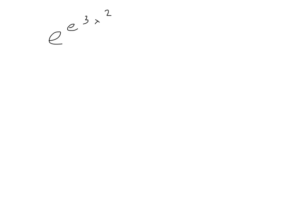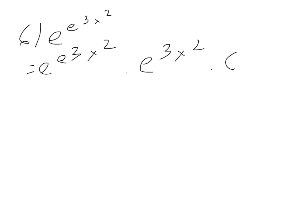The problem I found is the hardest to do is number 6. Taking the derivative of e to the e to the 3x squared, it will be e to the e to the 3x squared times e to the 3x squared times 6x.